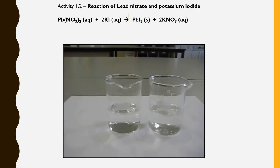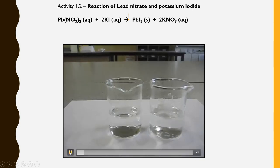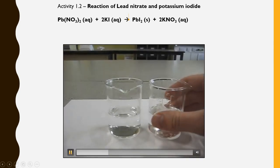Let's see another example. The reaction of lead nitrate and potassium iodide. If I see these two beakers are containing lead nitrate and potassium iodide. Both are colorless as well as transparent solution. So what happens when we mix these two solutions?